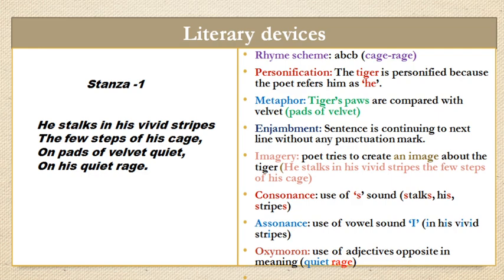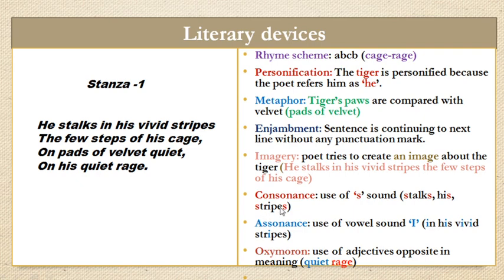Another figure of speech is enjambment — the sentence continues to the next line without any punctuation mark: 'He stalks in his vivid stripes' — there is no comma or full stop, and it continues to the second line. Imagery: the poet tries to create an image of the tiger. Consonance: the use of the S sound — 'stalks,' 'his,' 'strips.' Assonance: the use of the vowel sound I — 'in,' 'his,' 'vivid.' When consonant sounds are repeated it is consonance; when vowel sounds are repeated it is assonance.